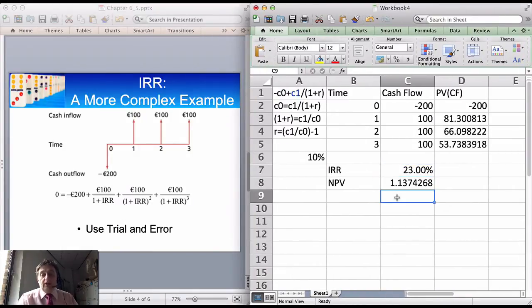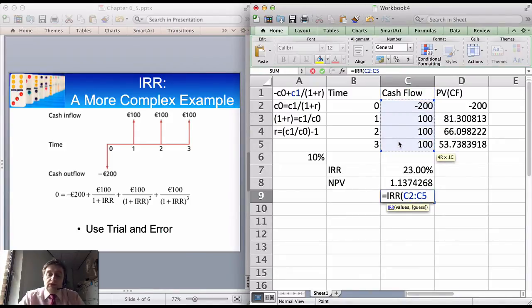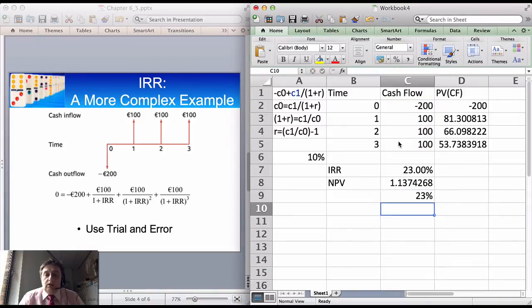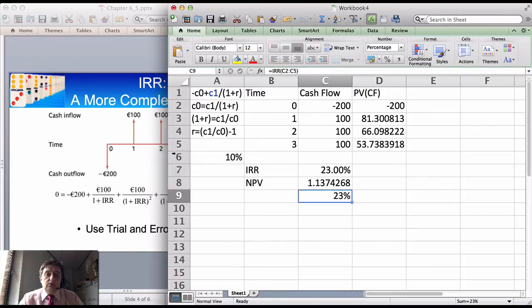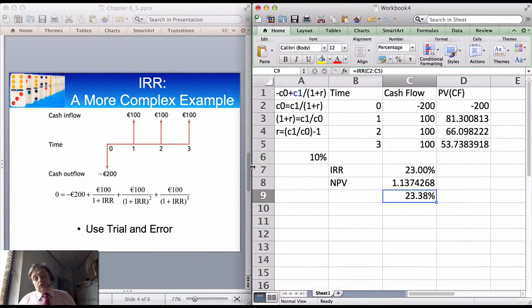The next method is to use the formula. Excel has a formula, and it's the internal rate of return formula. We do IRR and we just highlight the values. Very straightforward. We're left with 23%. I'm going to put it up to two decimal places, and as you see, our initial trial and error estimate of between 23% and 24% is replicated here, and the actual value is 23.38%.